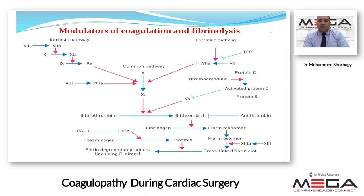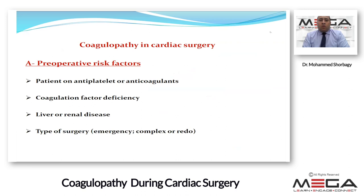Thrombomodulin forms a thrombomodulin-thrombin complex that activates protein C and protein S, which act as anticoagulants against factor 5 and factor 8. We also need to understand the fibrinolytic pathway because cardiopulmonary bypass triggers hyperfibrinolysis, making coagulopathy worse.